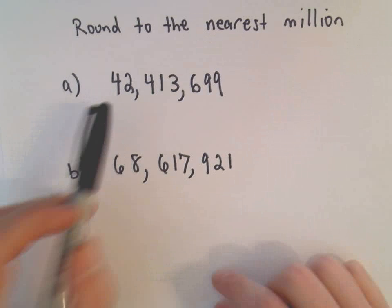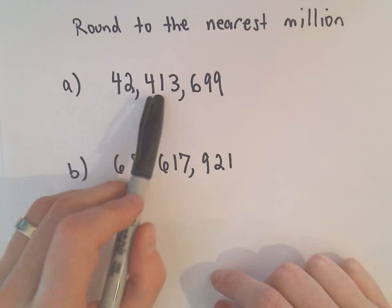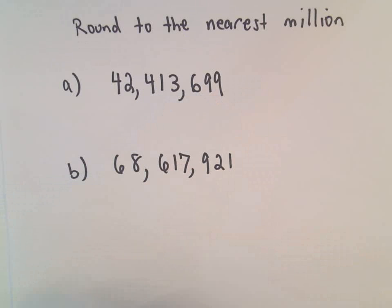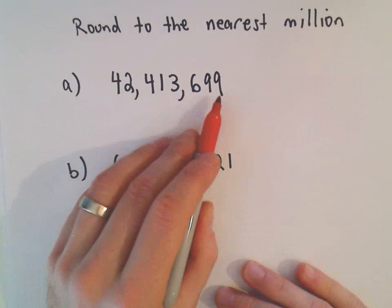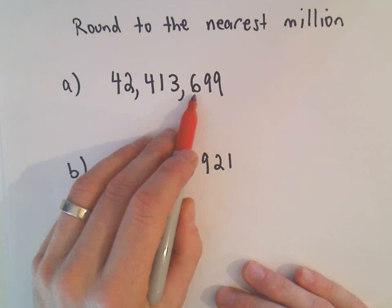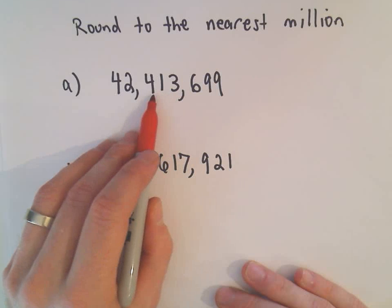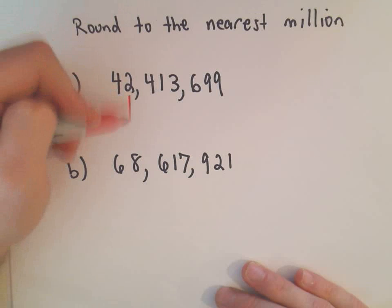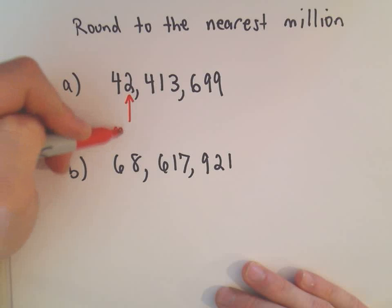So in part A here we've got 42,413,699. I'm going to find the millions place. So ones, tens, hundreds, thousands, ten thousands, hundred thousands. The two is occupying the millions place.